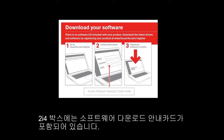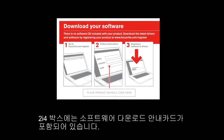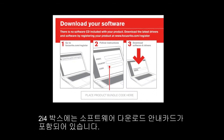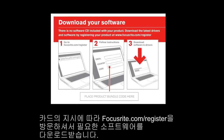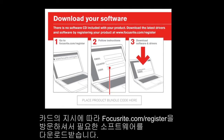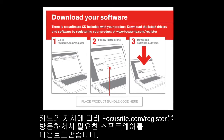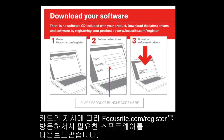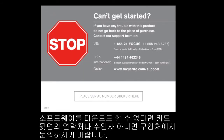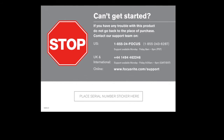You will notice there's a red and white card included in your 2i4 box. As per the instructions, go to focusrite.com/register, follow the instructions and finally download the relevant software and drivers. Should you run into problems, please turn the card over and all contact details are available.